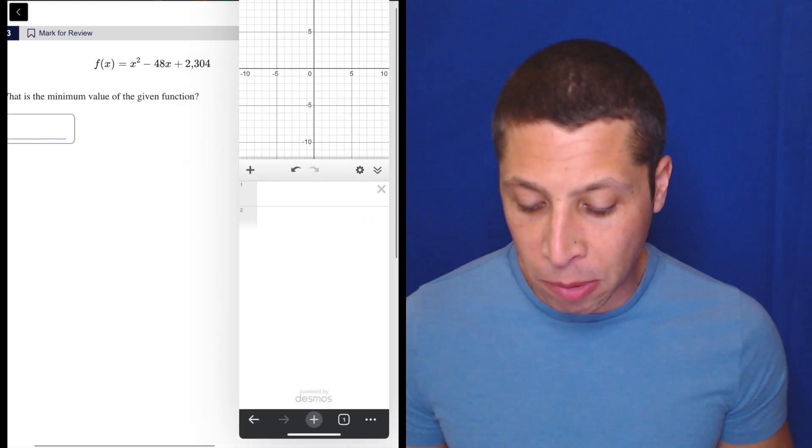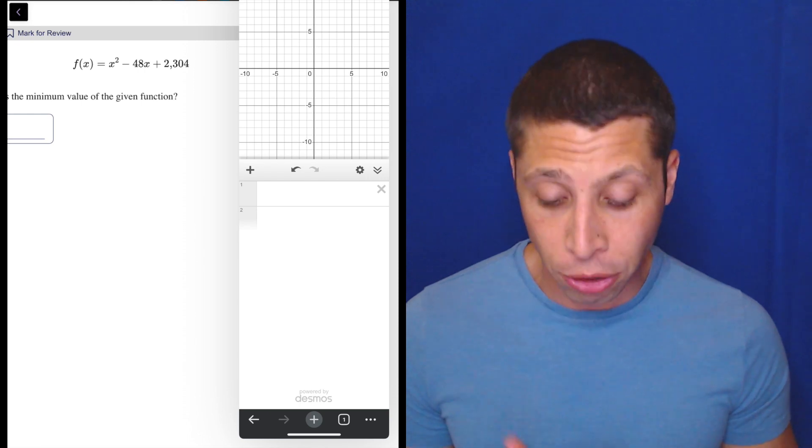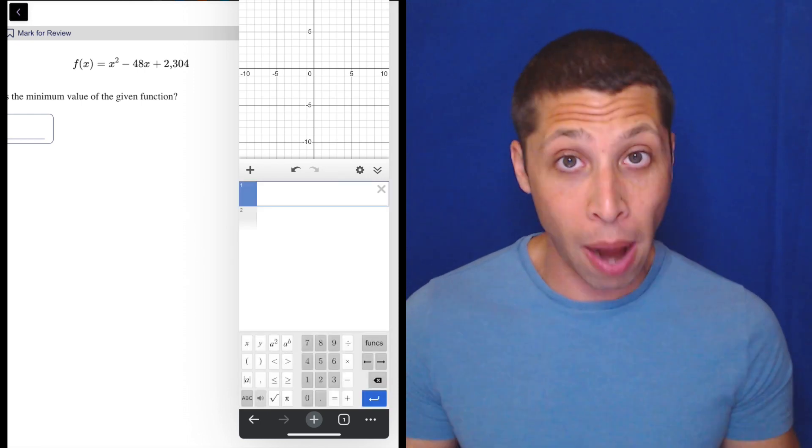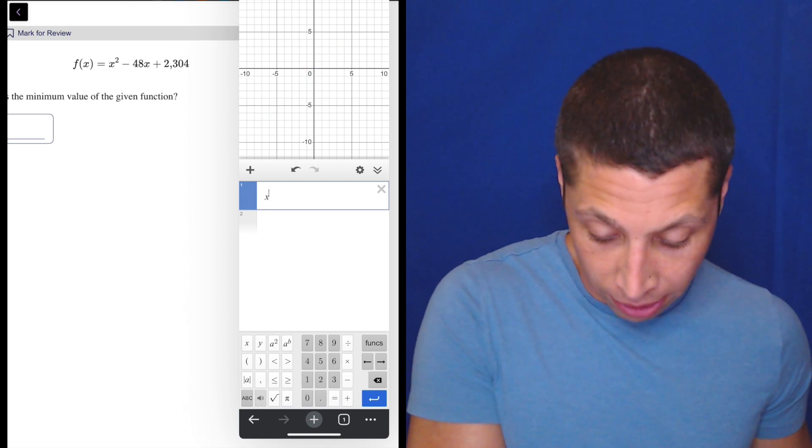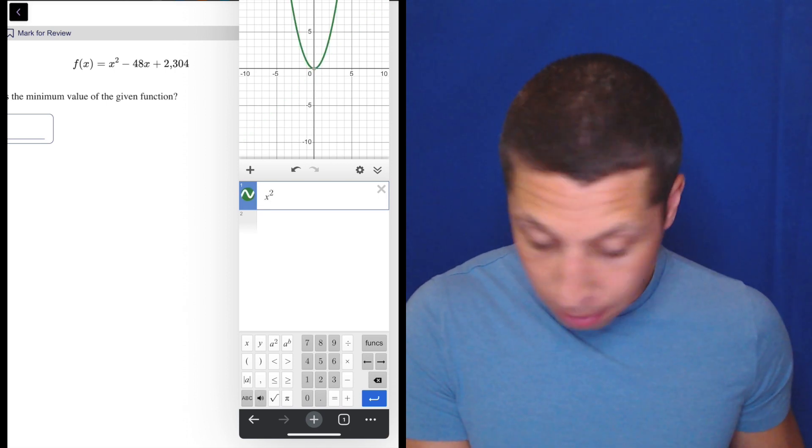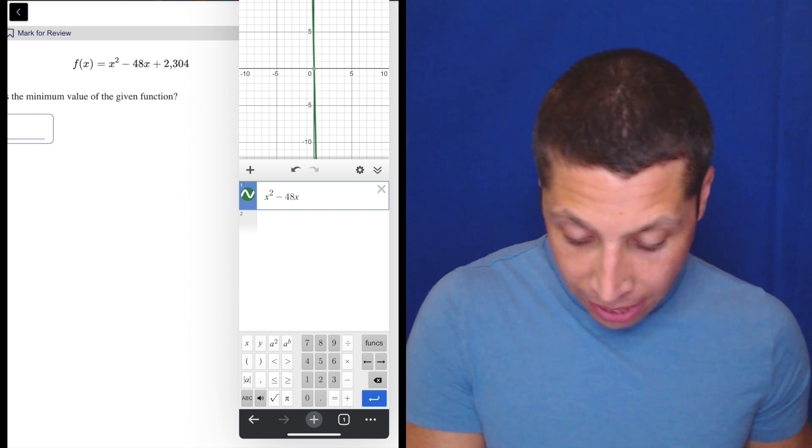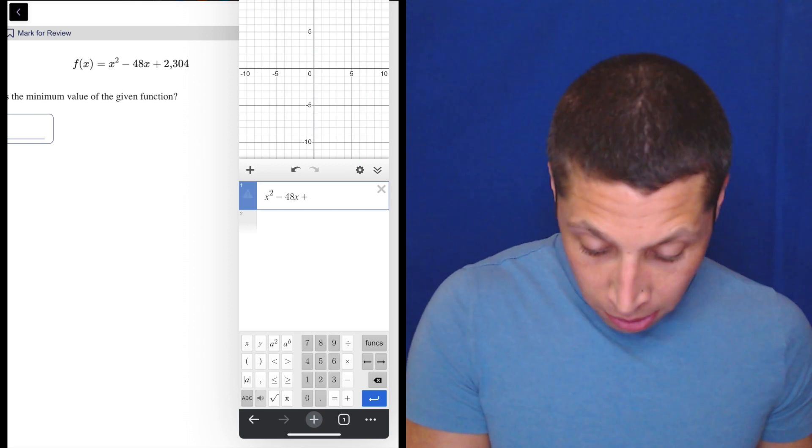Desmos is great for finding minimums because it allows us to touch the vertex of the parabola that comes up here. I'm just going to type it in. We have x squared minus 48x plus 2304.